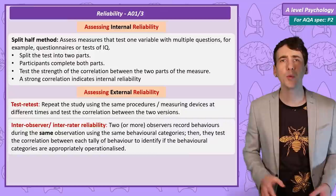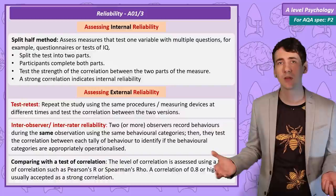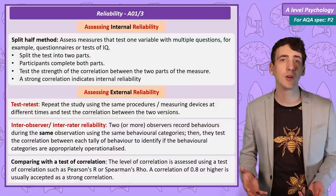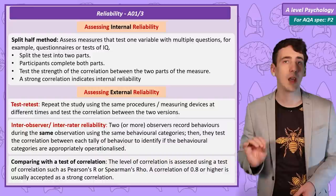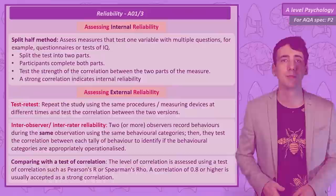So with both test retest and inter-rater reliability you will have two sets of data, and you want to see if they match — that is a test of correlation. We measure correlations with a statistical test, for example a Pearson's R or a Spearman's Rho. And generally most psychologists would be confident it is a reliable measure with a strong correlation of 0.8 or stronger.